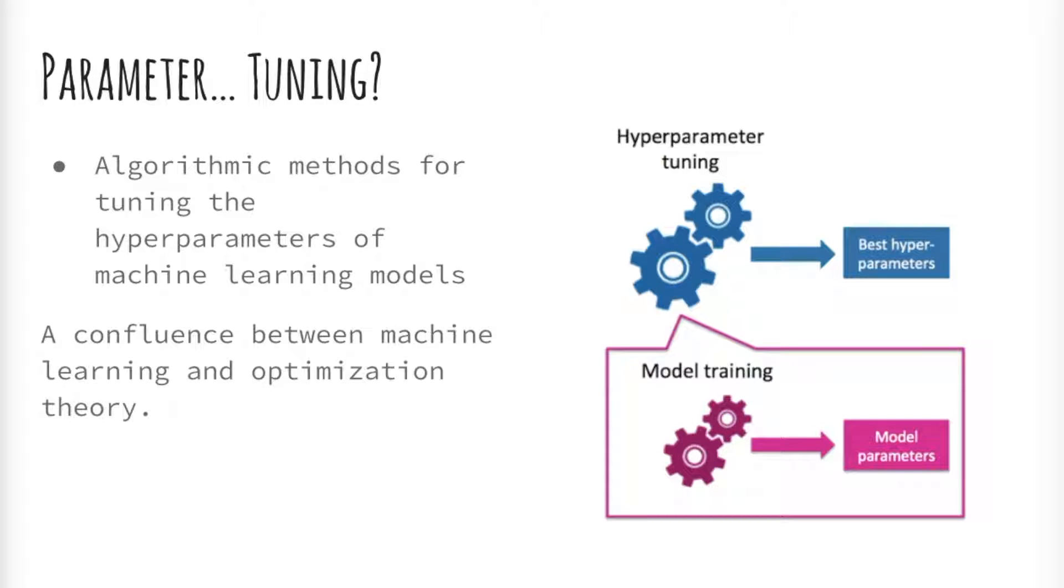Grid search and manual search are the most widely used strategies for hyperparameter optimization. The literature about this issue shows empirically and theoretically that randomly chosen trials are more efficient for hyperparameter optimization than trials on a grid. Empirical evidence comes from a comparison with a large previous study that used grid search and manual search to configure neural networks and deep belief networks.